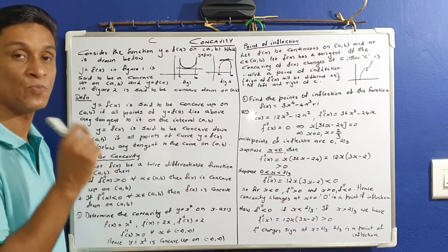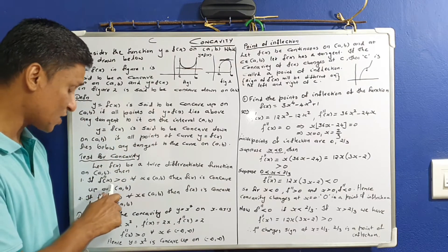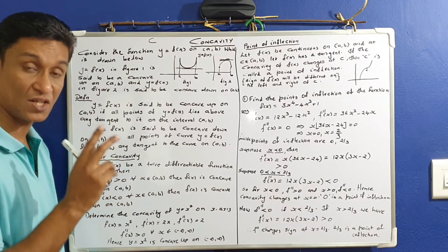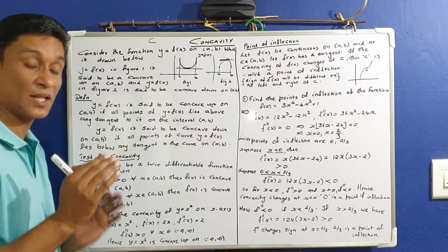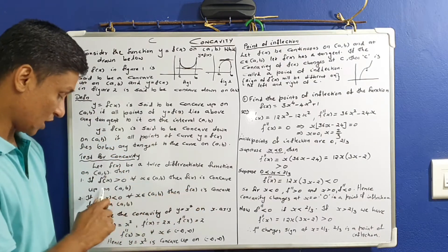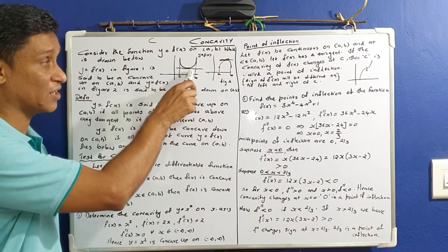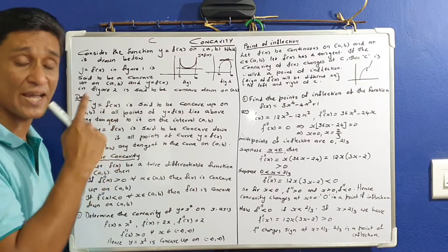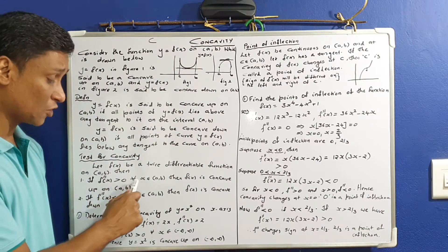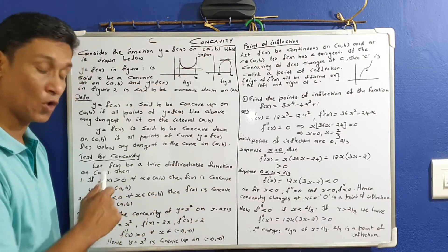If f of x is differentiable on ab with a second derivative: if f double dash x is greater than 0 for all x element of ab, throughout the interval greater than 0, then f of x is concave up on ab.